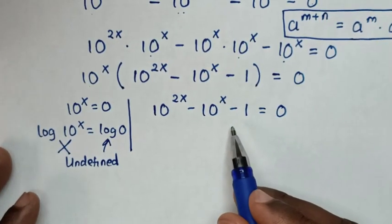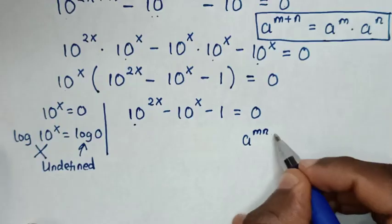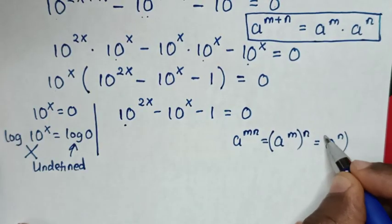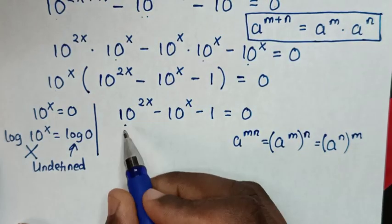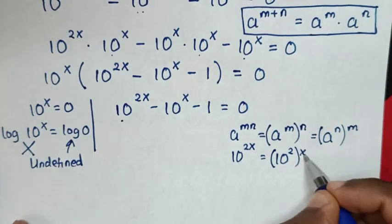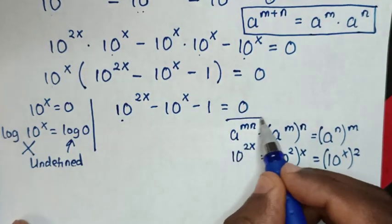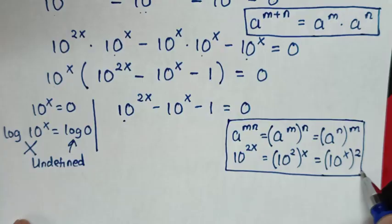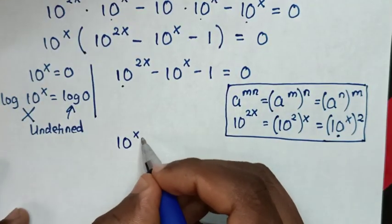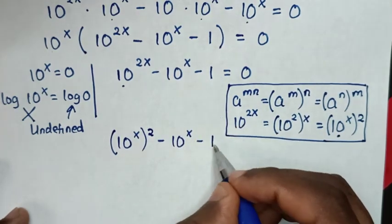We continue to solve from the second solution. We apply the exponential rule that a to the power of mn equals (a to the power of m) to the power of n, so 10 to the power of 2x equals (10 to the power of x) squared. We substitute this into the equation to get (10 to the power of x) squared minus 10 to the power of x minus 1 equals 0.